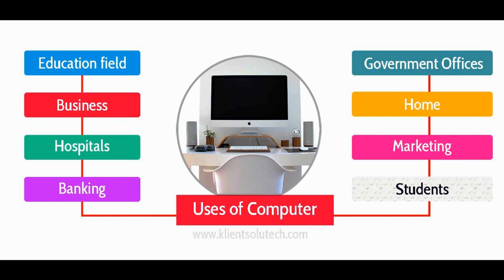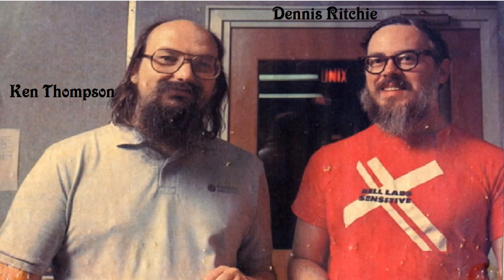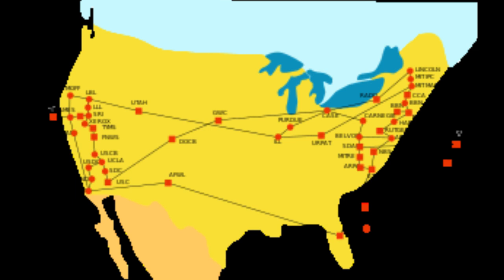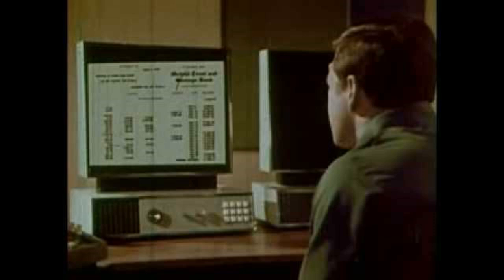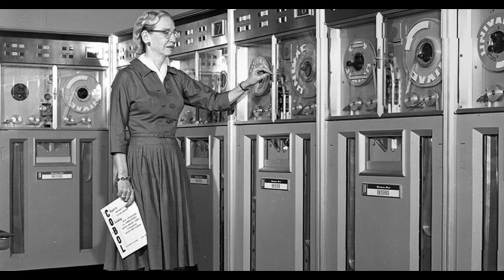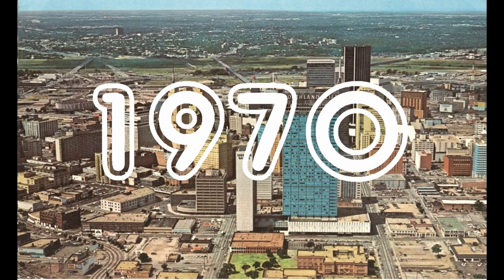By 1969, Ken Thompson and Dennis Ritchie at Bell Labs produced the UNIX operating system, which made large-scale networking of diverse computing systems and the internet practical using the C programming language. We have Grace Hopper to thank for that foundation, because without her pioneering work on programming languages, Bell Labs' creation of UNIX may not have followed.